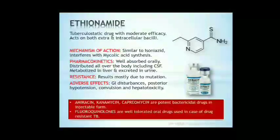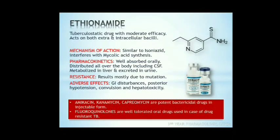Ethionamide. It is a tuberculostatic drug with moderate efficacy. It acts on both extra- and intracellular bacilli. Chemically it is similar to isoniazid but contains sulfur, so the mechanism of action is also similar — it interferes with mycolic acid synthesis. It is well-absorbed orally, distributed all over the body including CSF, metabolized in liver, and excreted in urine. Resistance results mostly due to mutation. Adverse effects include GI disturbances, postural hypotension, convulsions, and hepatotoxicity.